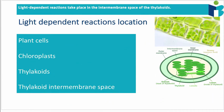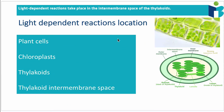The light dependent reactions take place in the intermembrane space of thylakoids. To understand what that is, you first have to zoom out a little bit. Photosynthesis happens in plant cells, and more specifically it happens inside the chloroplasts of plant cells — these are the organelles, the little units that we find inside of plant cells.